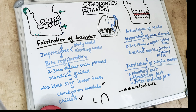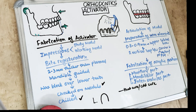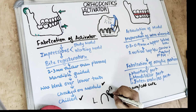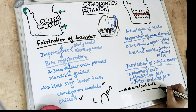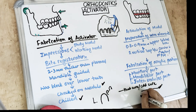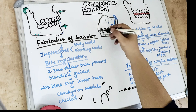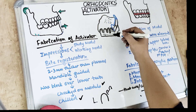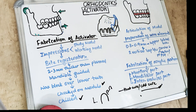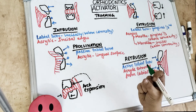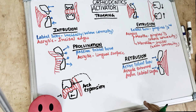The acrylic portion is fabricated onto the cast. Wires are secured with sticky wax. If using cold cure resin, it is applied directly; if using heat cure resin, the models are first waxed and then flasked. The activator consists of three portions: the maxillary part, the interocclusal part, and the mandibular part.